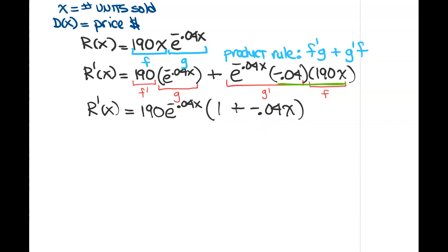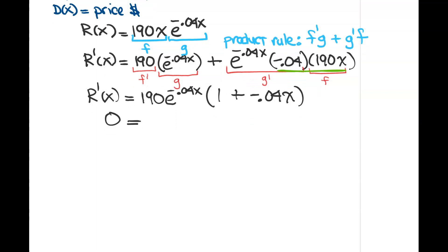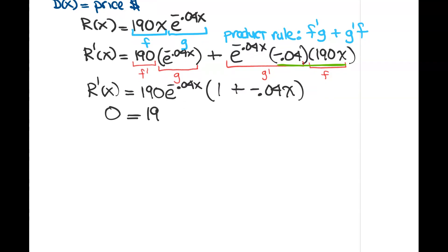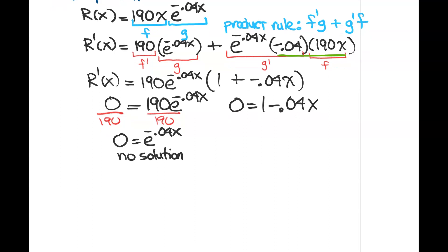Now I'm going to set it equal to 0, find my critical points. So when I set it equal to 0, I set each factor equal to 0. So I'm going to have 190e^(-0.04x) equal to 0, and I'm going to have 1 - 0.04x equal to 0. Solving this first one, if I divide by my 190, I'm going to end up with e^(-0.04x) equal to 0. And e to a power never equals 0, so this is not going to give me any solution. So no critical points are going to come from that term.